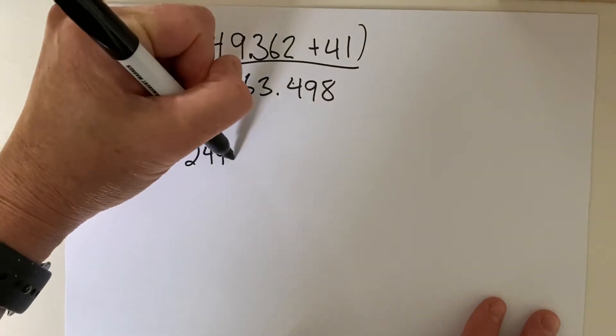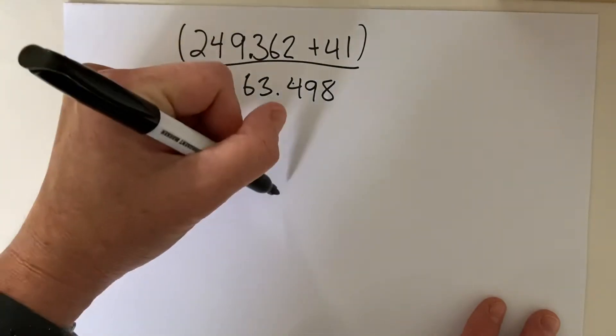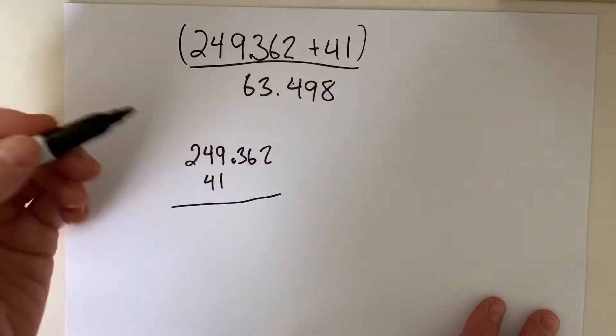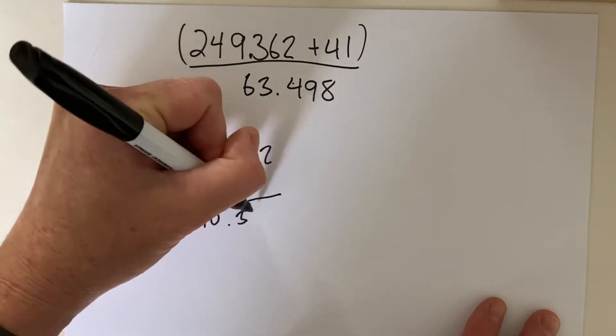You would say 249.362, and I'm going to add it up with the decimal places aligned. Alright, so when you add this up, you end up with an answer of 290.362.